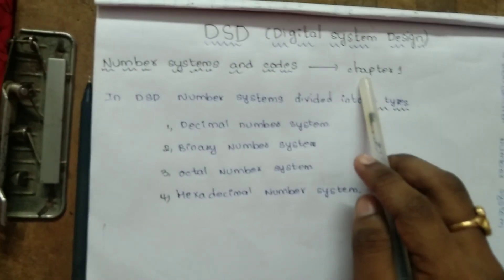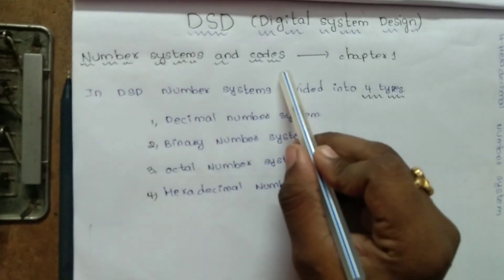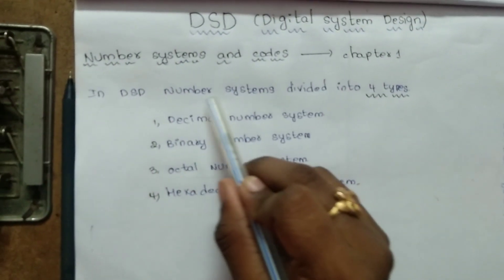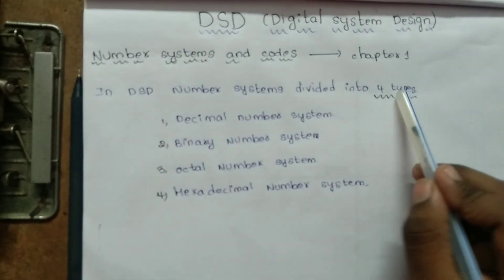I am in the first chapter of DSD, Number Systems and Codes. In Number Systems and Codes, our first topic is about Number Systems. In DSD, Number Systems is divided into four types.